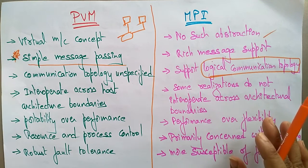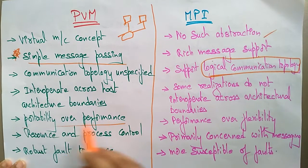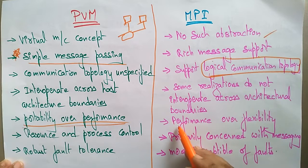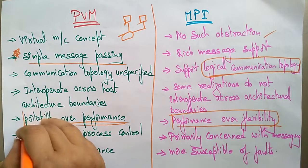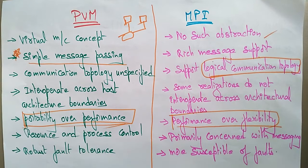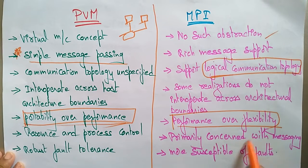PVM prioritizes portability over performance, but MPI prioritizes performance over flexibility. This is a key difference between PVM and MPI. Additionally, in PVM the focus is on resource and process control, whereas in MPI the focus is primarily on messaging only.